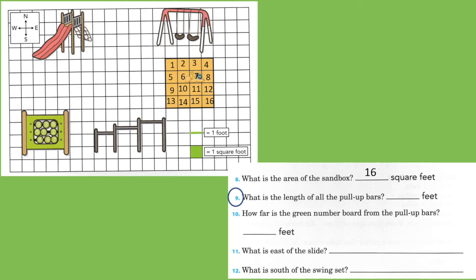Number nine. What is the length of all of the pull-up bars? Let's find the pull-up bars. Oh, they look kind of like ours on our playground. One, two, three, four, five, six. There are six feet.